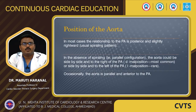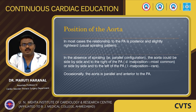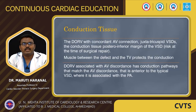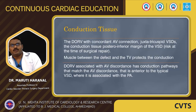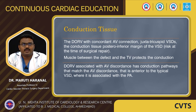Considering the position of the aorta: in most cases the relationship of the PA is posterior and slightly rightward, the usual spiraling pattern. In the absence of spiraling — that is, parallel configuration — the aorta could be side-by-side and to the right of the PA (D-malposed position, most common), or side-by-side and to the left of the PA (L-malposed, rare). Occasionally the aorta is parallel and anterior to the PA.